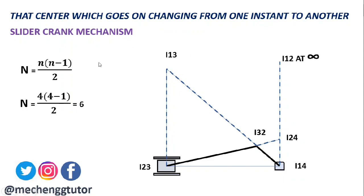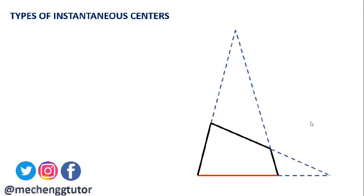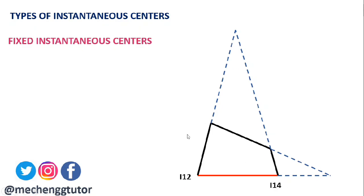Now we shall see the different types of instantaneous centers, using the four-bar mechanism as it is easier to understand. The first type is the fixed instantaneous center — these are instantaneous centers that remain in the same place regardless of the configuration of the mechanism. For the four-bar mechanism, I₁₂ and I₁₄ are the fixed instantaneous centers, as they do not change no matter what position the other three links are in.